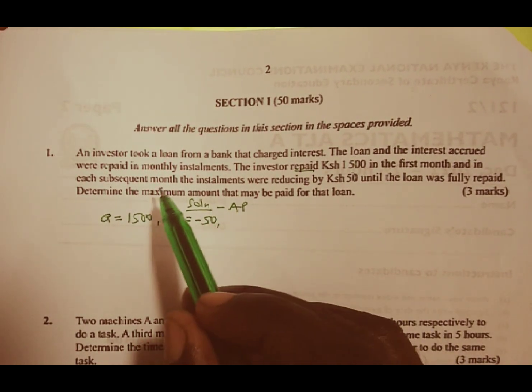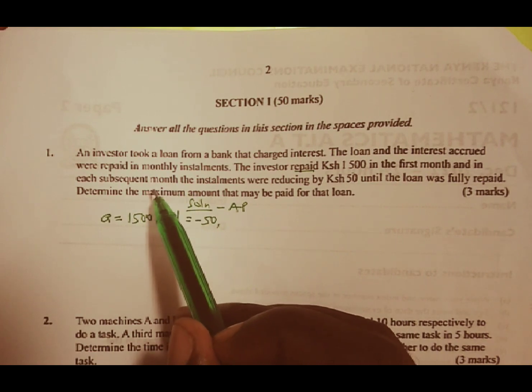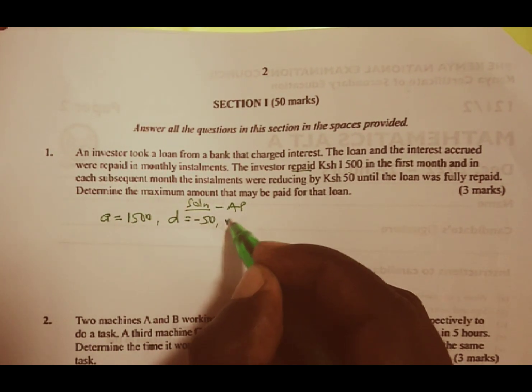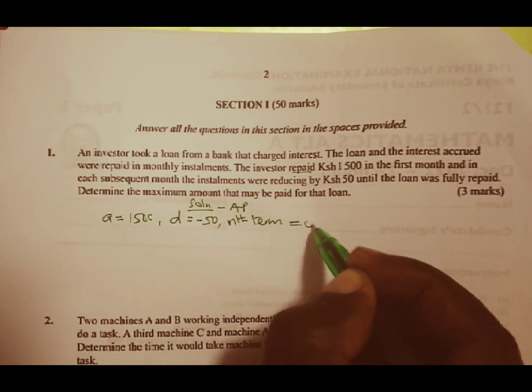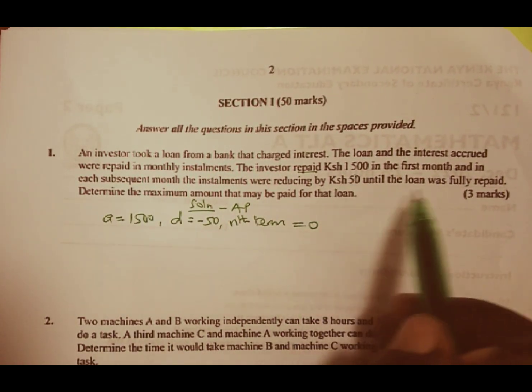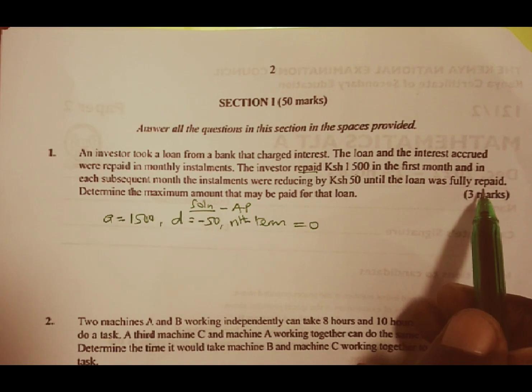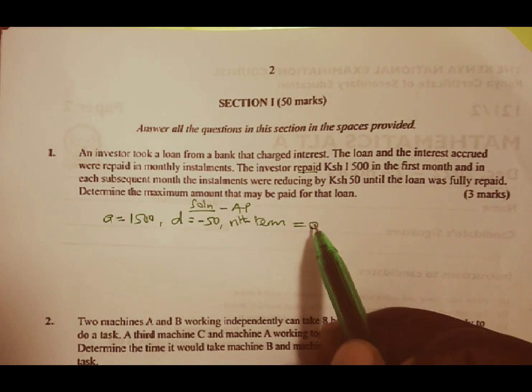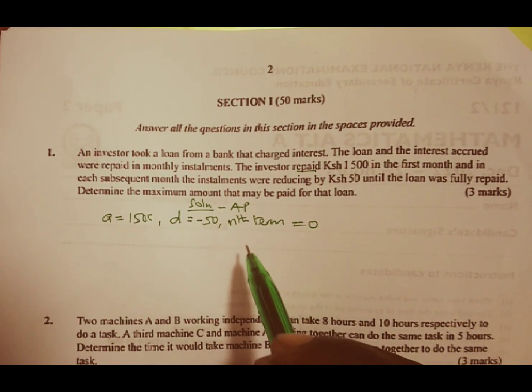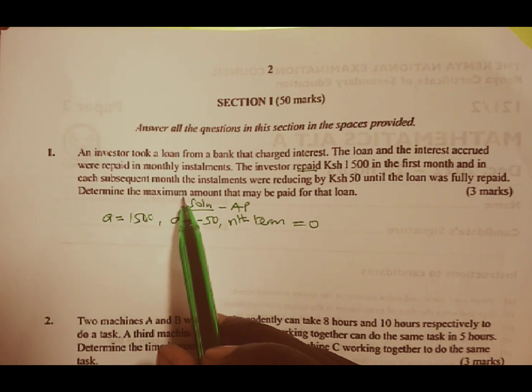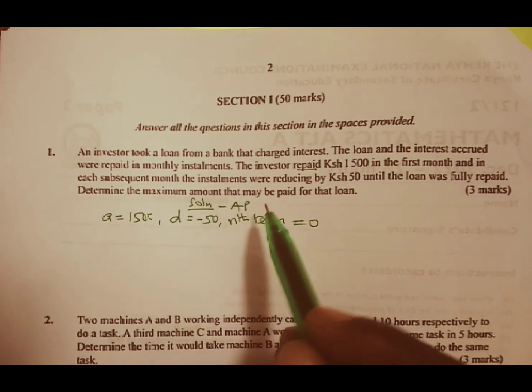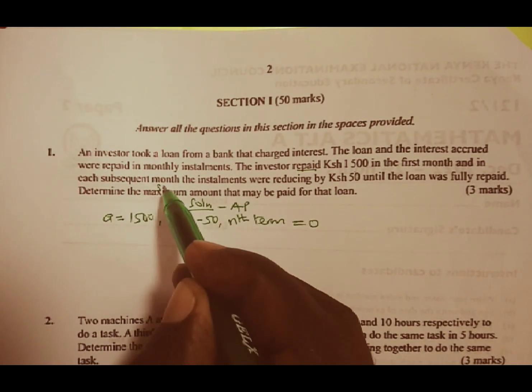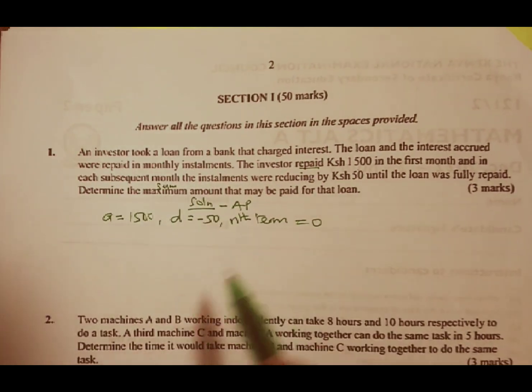The next thing we need to do is find the nth term. The nth term in this case is going to be 0 because the loan was fully repaid, meaning up to the last coin. Before we find the maximum, which refers to the sum, we need to find the number of terms.